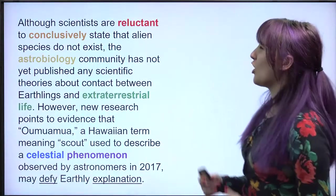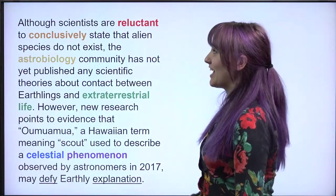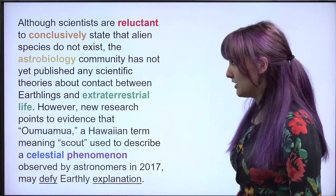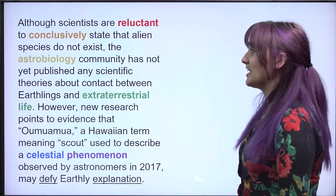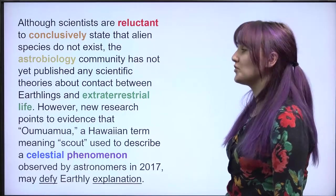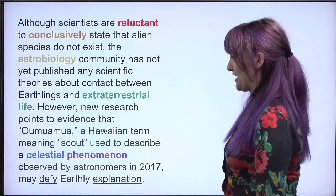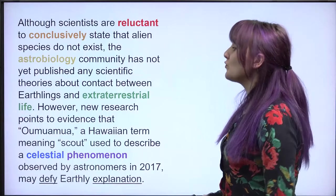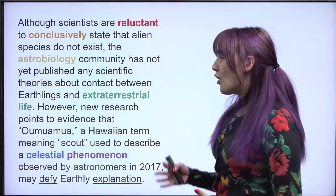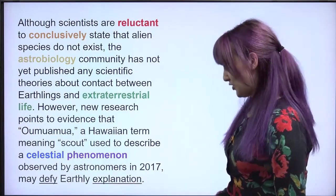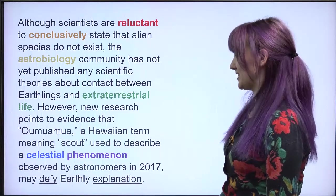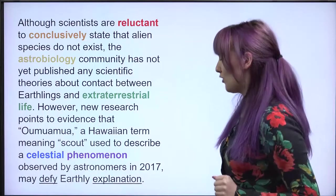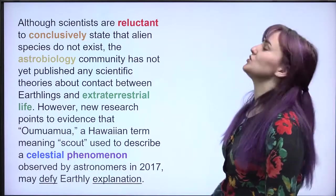Although scientists are reluctant to conclusively state that alien species do not exist, the astrobiology community has not yet published any scientific theories about contact between earthlings and extraterrestrial life. However, new research points to evidence that Oumuamua, a Hawaiian term meaning scout, used to describe a celestial phenomenon observed by astronomers in 2017, may defy earthly explanation. Very interesting.